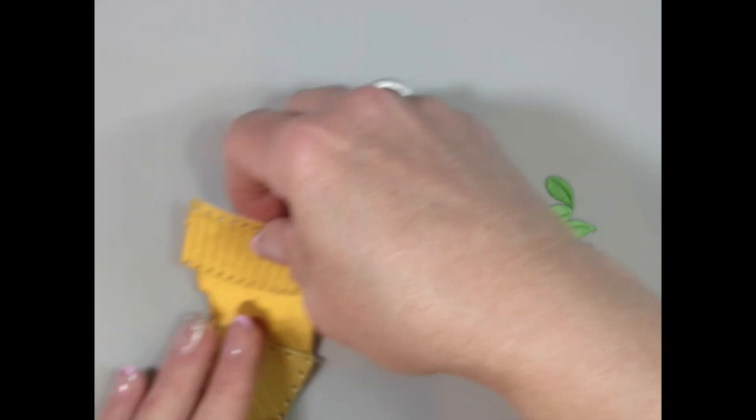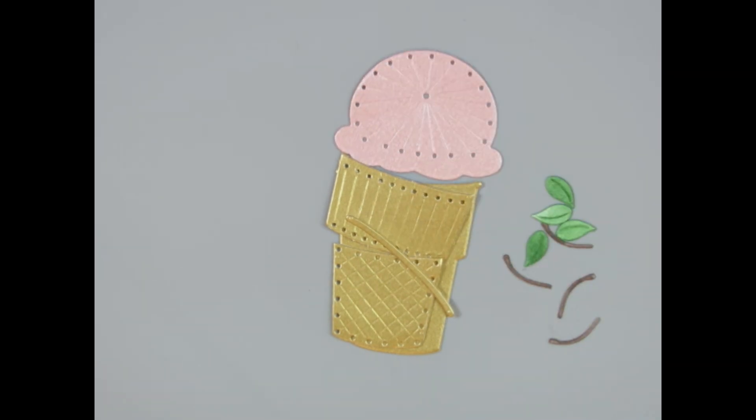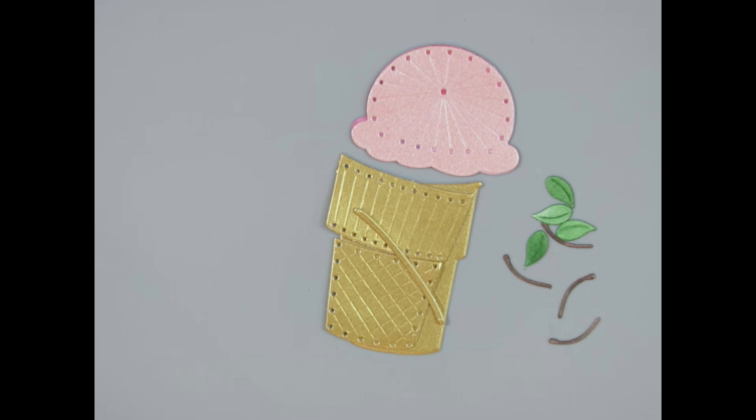Now that I have my pieces all cut out, you can see how nice this has been embossed because the Spellbinders dies do a wonderful job, not only cutting but also embossing. And then I'm just going to decide what my layout is going to be. I'm thinking about an ice cream cone, obviously here, a strawberry one.